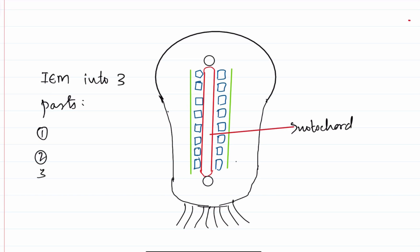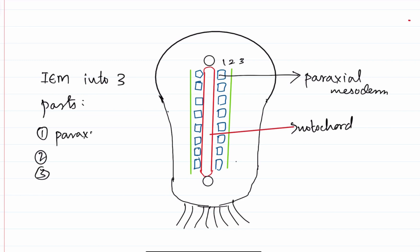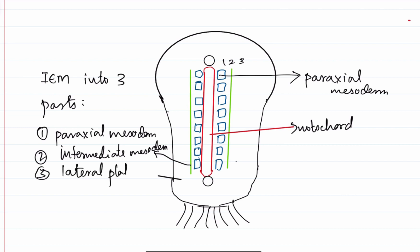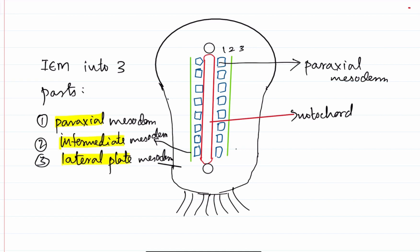So which are these three parts? Just paraxial to the notochord, we have a cubical structure. Then we have the second region over the groove, which is marked by the green lines, and then beside it we have the third region. The first region that is present just beside the notochord — present paraxial, that is beside the central axis — is called the paraxial mesoderm. Beside it, we have the green line, which is called the intermediate mesoderm. And lateral to the intermediate mesoderm, we have our third region, which is called the lateral plate mesoderm.